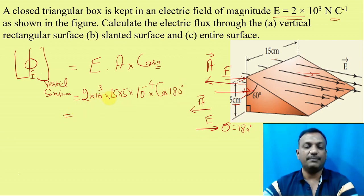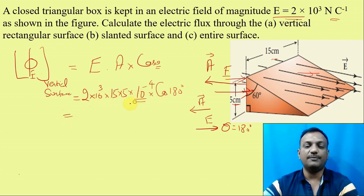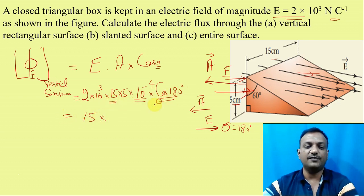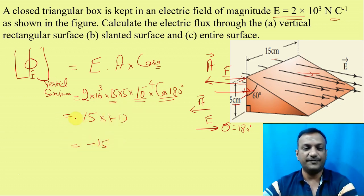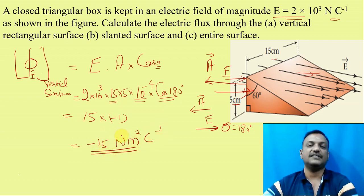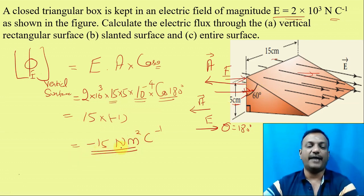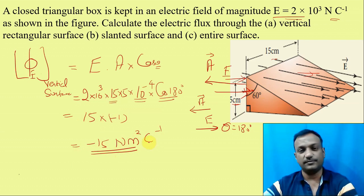So E is 2 into 10 cubed, which is 10 to the power 4. Area is 10 to the power minus 4, so they cancel. Then 15 into cos 180, cos 180 is minus 1. The answer is minus 15 Newton meter squared Coulomb to the power minus 1. So in the vertical surface, the flux is minus 15 Nm² C⁻¹.